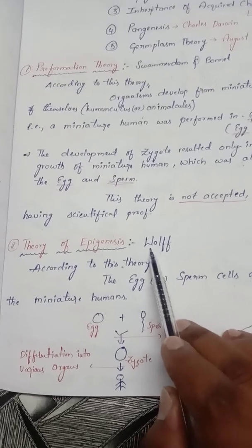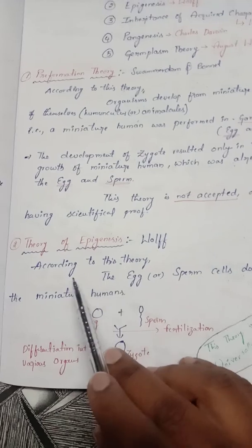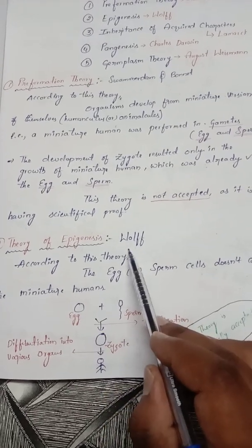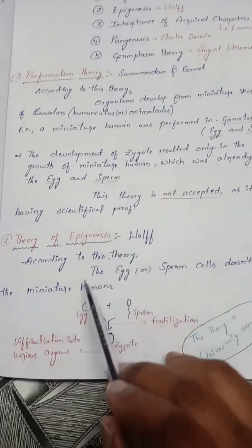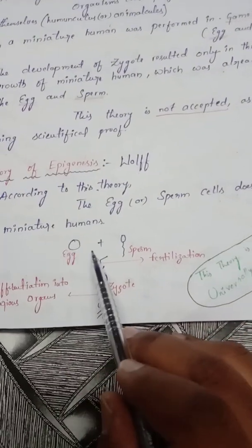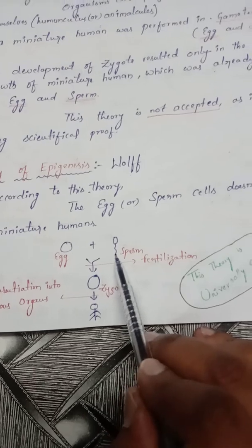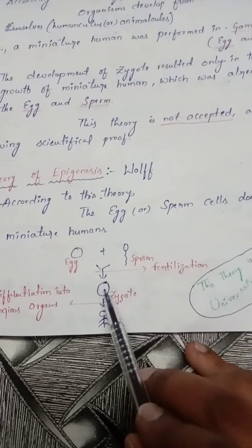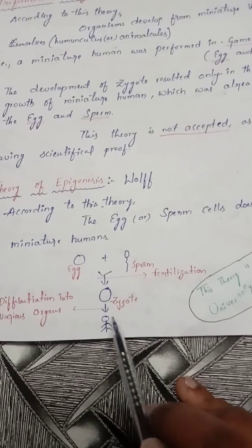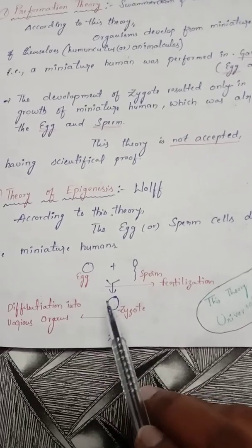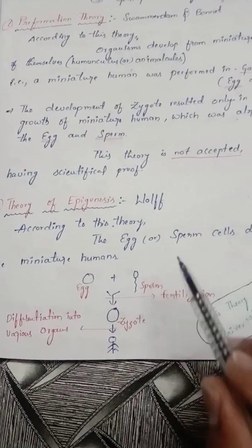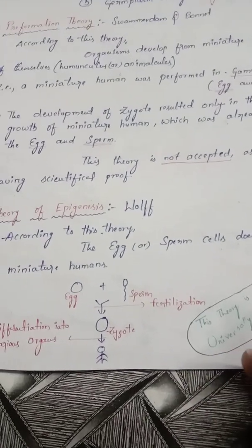Next is the theory of epigenesis given by Wolf. According to this theory, the egg or sperm cell does not contain miniature humans. Wolf rejected the preformation theory. The egg (female gamete) and sperm (male gamete) fertilize and give rise to a zygote, and in this zygote differentiation happens — differentiating into various organs to produce a human being. This theory has scientific proof and is universally accepted.